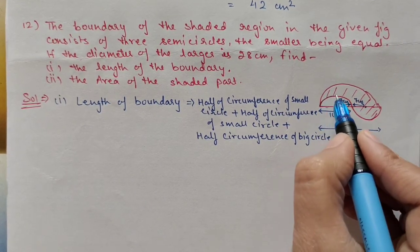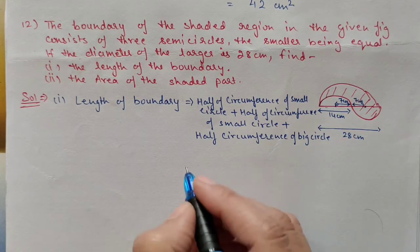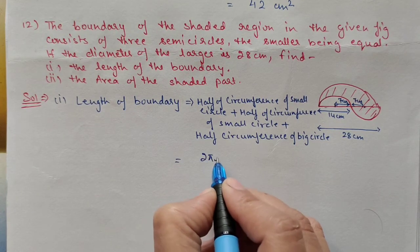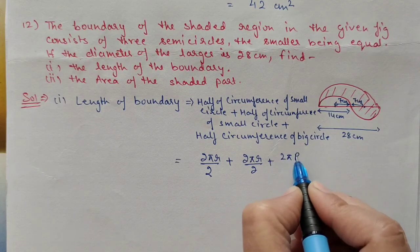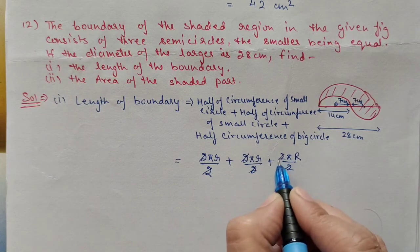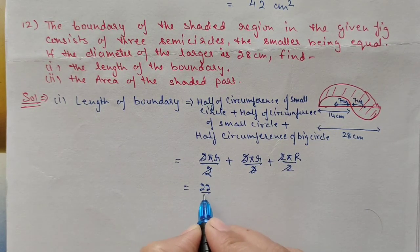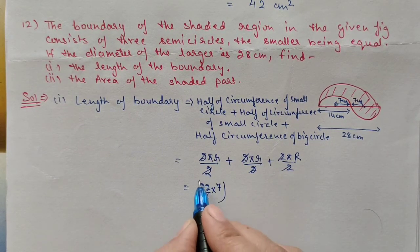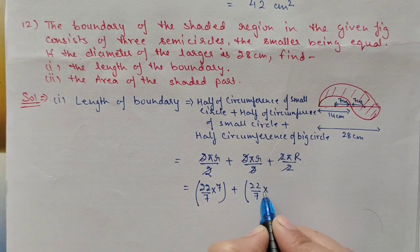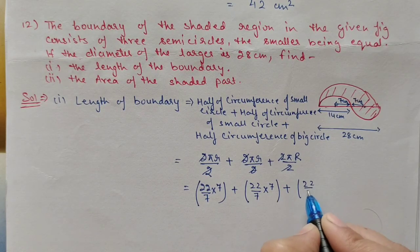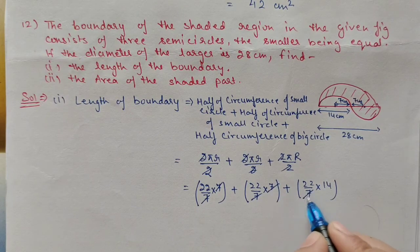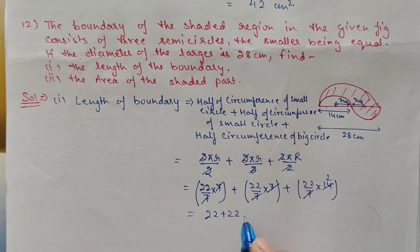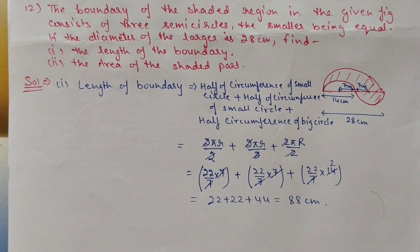Each half circumference is 2 pi r divided by 2, which simplifies to pi r. So boundary equals pi r (small) plus pi r (small) plus pi R (big). That is 22/7 into 7, plus 22/7 into 7, plus 22/7 into 14. Cancelling 7s: 22 plus 22 plus 44 equals 88 centimeter. The boundary length is 88 centimeter.